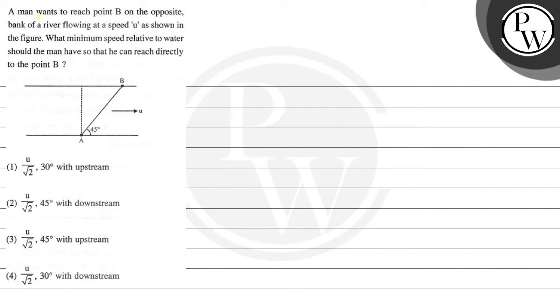Hello guys, let's see this question. A man wants to reach point B on the opposite bank of a river flowing at a speed U as shown in the figure.